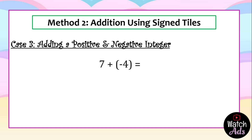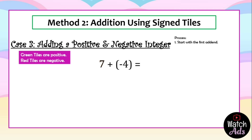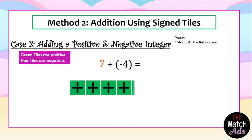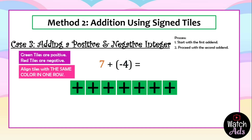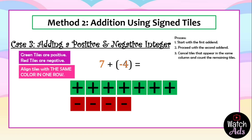For our third case, we add a positive and negative integer: seven plus negative four. We start with seven, which is positive, and use seven green tiles. Then for the second addend, negative four, we use four red tiles. Next we cancel tiles that appear in the same column — cancel each positive and negative pair. What we have left is three green tiles. A green tile is positive, so the final answer is positive three, or simply three.